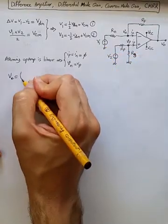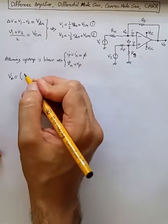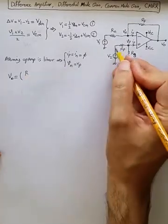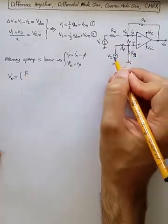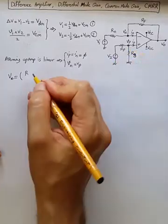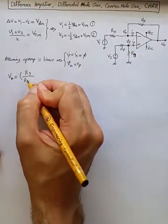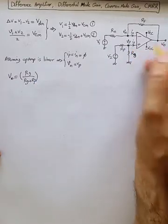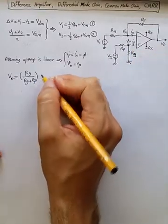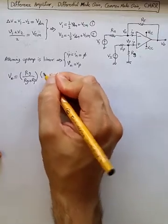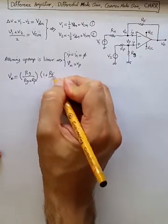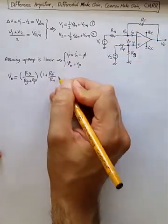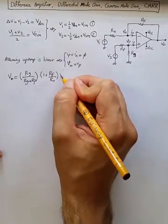That would be, using these, effectively a voltage divider between these two to get the V2 contribution at the positive terminal. The gain from here to the output is well known to be 1 plus RF over Rn, times V2.